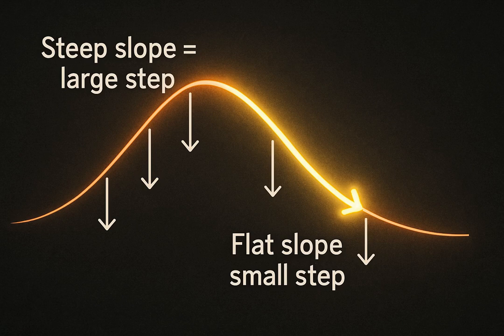So how does gradient descent decide the direction to move? That's where gradients come in. A gradient is like the slope of the curve. If it's steep, the algorithm takes a bigger step. If it's flat, the step is smaller.